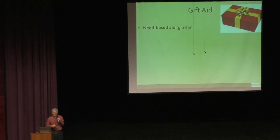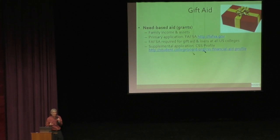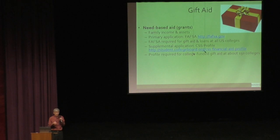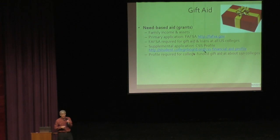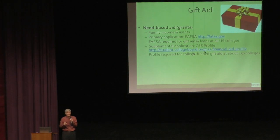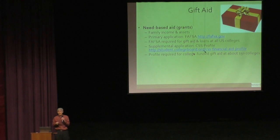Need-based aid, typically called grants, is based most often on family income and assets. You apply using the FAFSA form — the federal financial aid form required at all colleges in the U.S. Many colleges also require a second form called the CSS Profile. There are about 2,500 four-year colleges in the U.S. and only about 150 use the profile. But those that do tend to be more generous with need-based aid and are the well-known colleges you've probably heard of, so there's a good chance you'll deal with the profile.